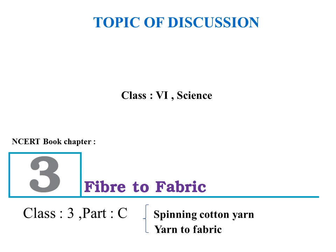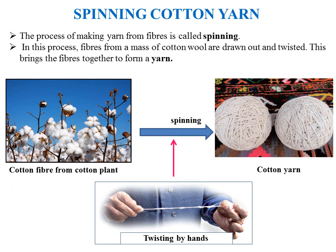We have varieties of materials made of cotton, such as clothes, bedsheets, and fishing nets. In order to make them useful, we can't use fiber directly because it does not have the required length and strength.